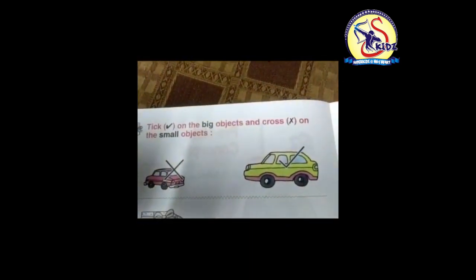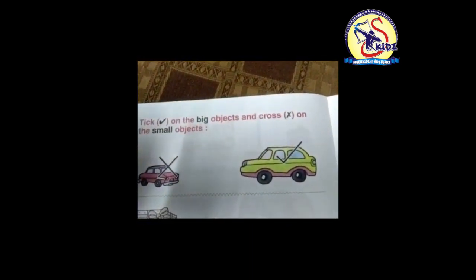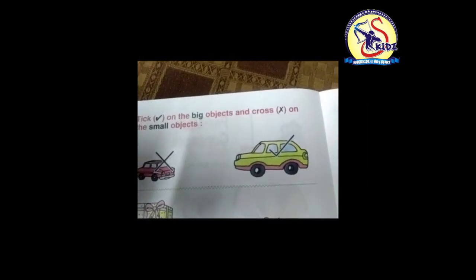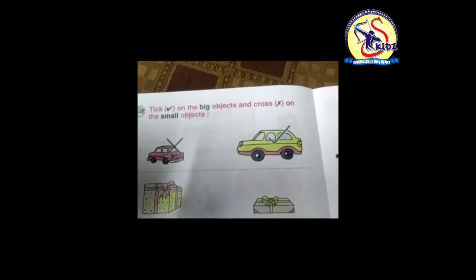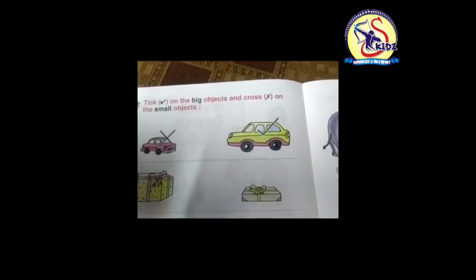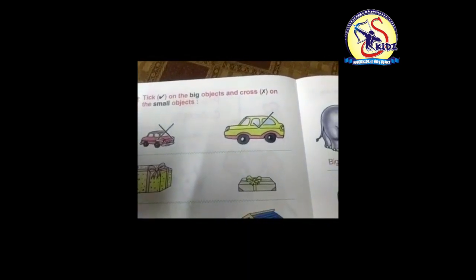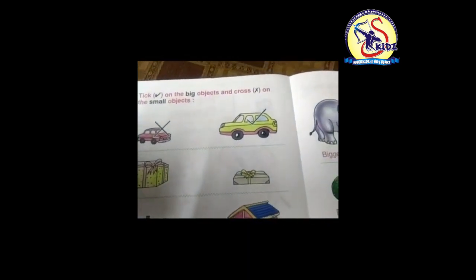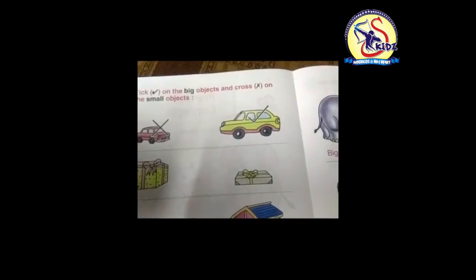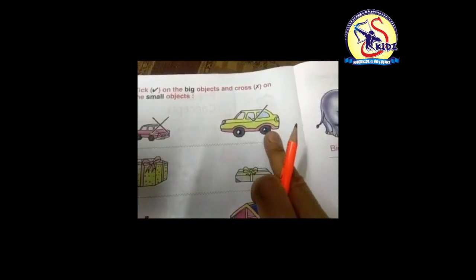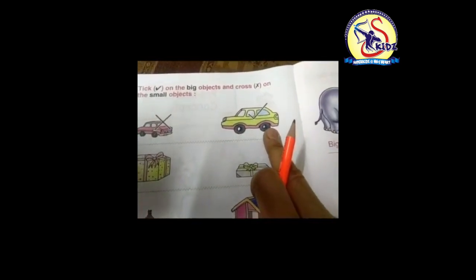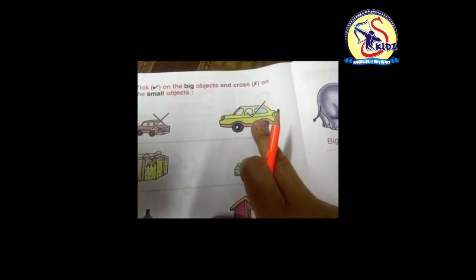Similarly, as we have done before, the first example is for you. See — this is a small car and this is a big car. So tick on the bigger car and cross on the small car.